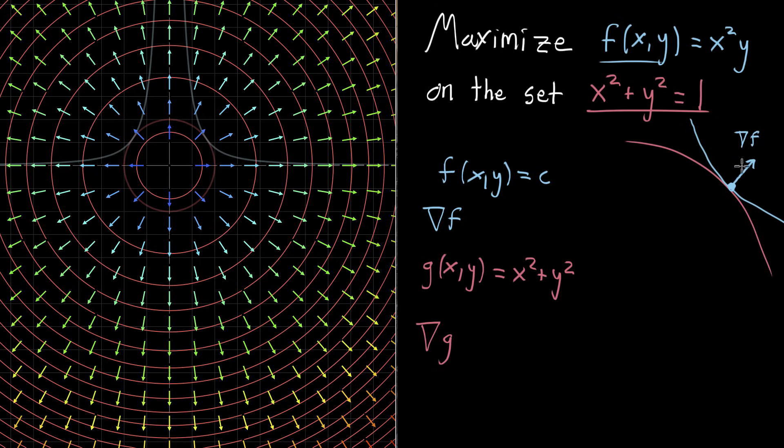So over on our drawing here, the gradient vector of g would also be perpendicular to both these curves. And maybe in this case it's not as long as the gradient of f, or maybe it's longer, there's no reason that it would be the same length. But the important fact is that it's proportional.